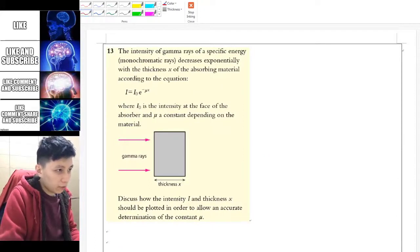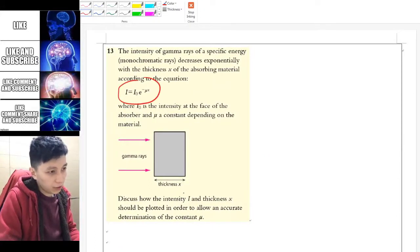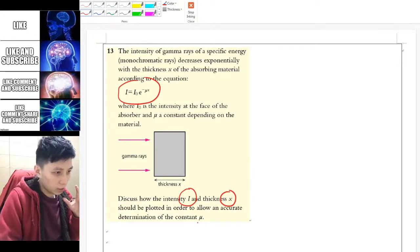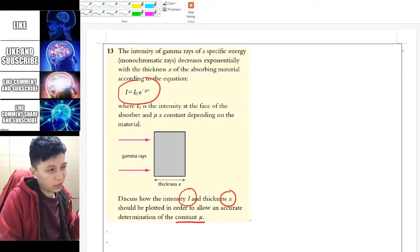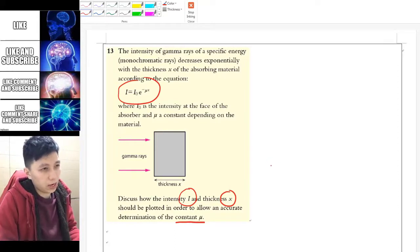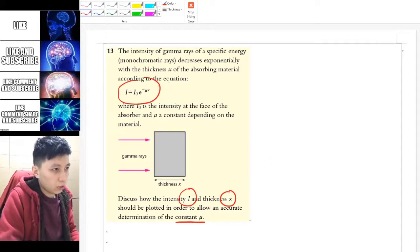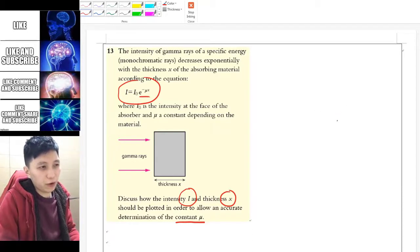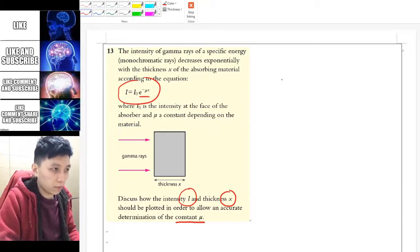You have got this equation and eventually you want to have I and X to be the two variables for X and Y. The constant is mu and hopefully you could deduce, I guess eventually it's something related to the slope or either Y intercept. So for this one, obviously when you see this, the first thing you should think of is using the natural log. So let's take natural log on both sides.